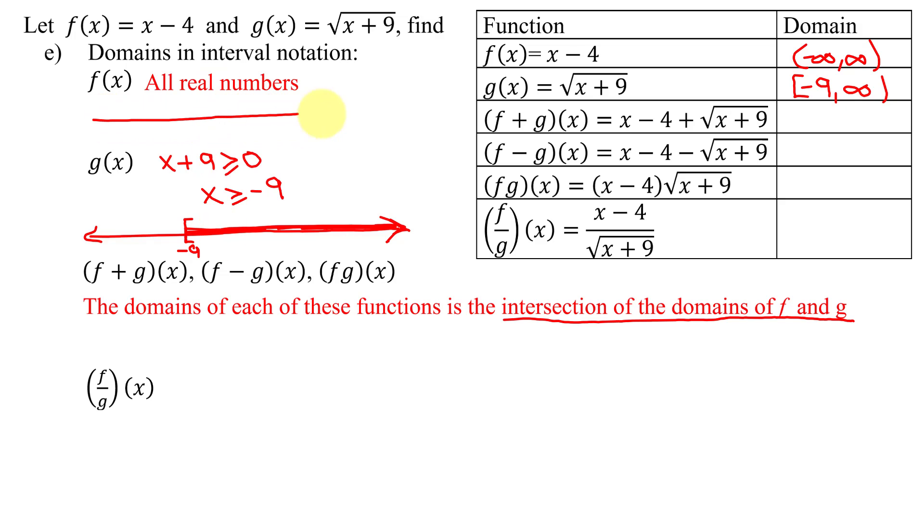Well, remember, all real numbers, if I graph it, looks like everything on the number line. And what do these two domains have in common? Well, just this part here, they do not have this part here in common. So their domains are negative 9 with a square bracket to infinity for all three of those functions.